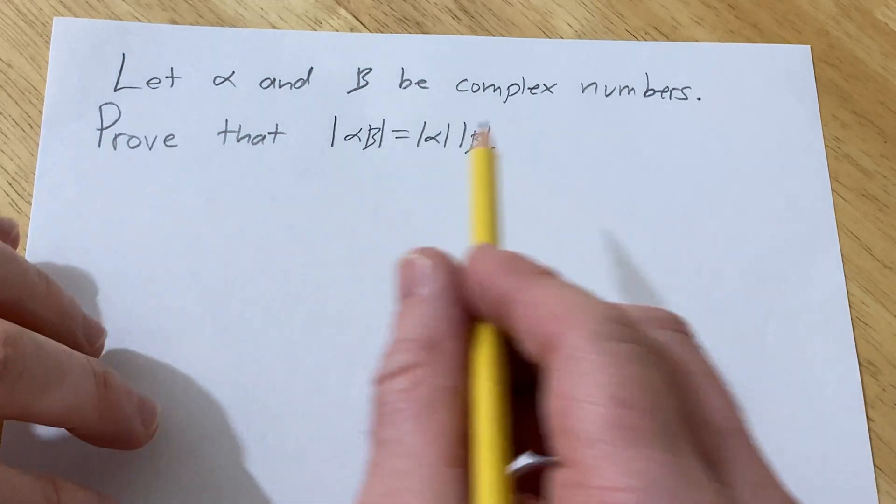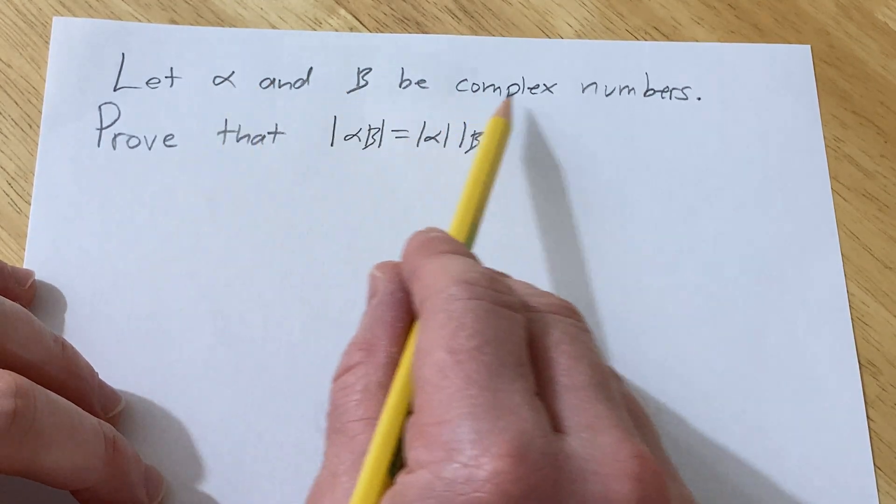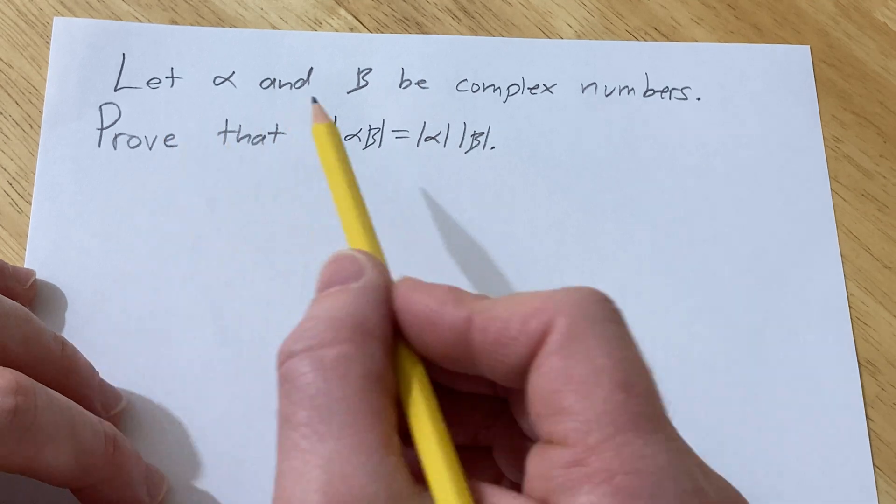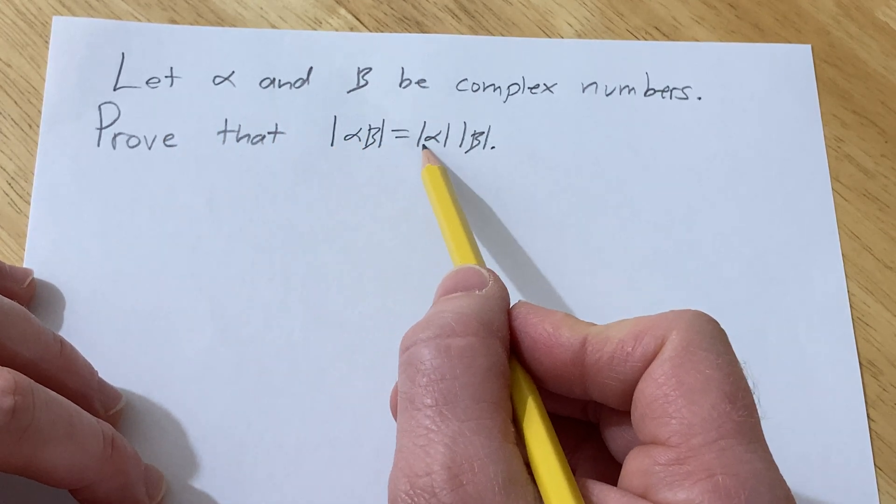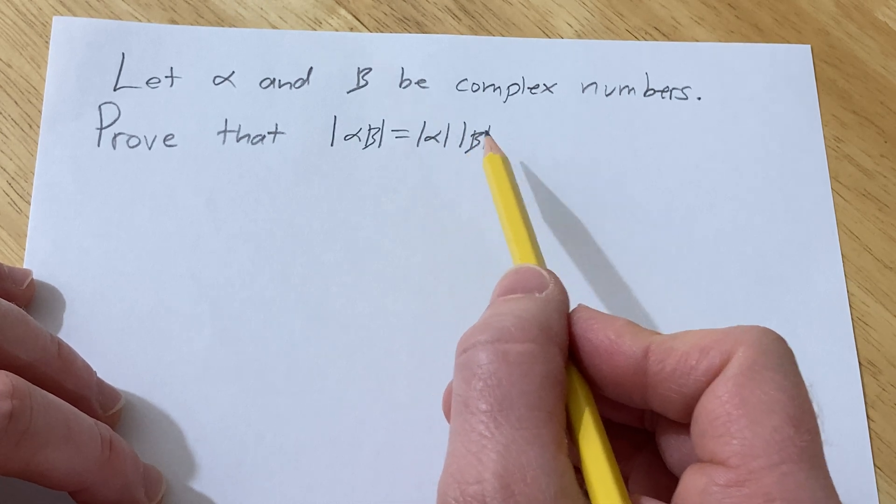Hello, in this video we're going to do a proof. So let alpha and beta be complex numbers. Prove that the modulus of alpha times beta is equal to the modulus of alpha times the modulus of beta.